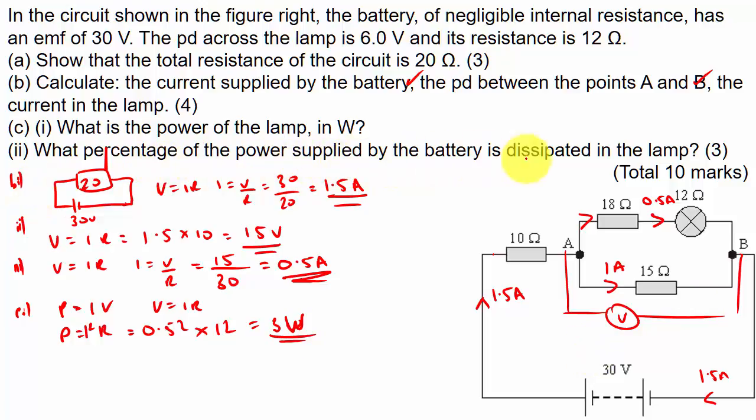Now it asks me what percentage of power supplied by the battery is dissipated by the lamp. So it's 3 watts out of a total of how much power is being supplied by the battery. The battery is 30 volts, the current flowing from it is 1.5 amps. I can just use P equals IV to calculate the total power. Current is 1.5, V is 30, 1.5 into 30 is 45 watts. This is what's being lost over the lamp. So 3 out of 45, get this as a percentage: multiply by 100, you get 6.6666 recurring, so I'm going to round that to 6.7%.